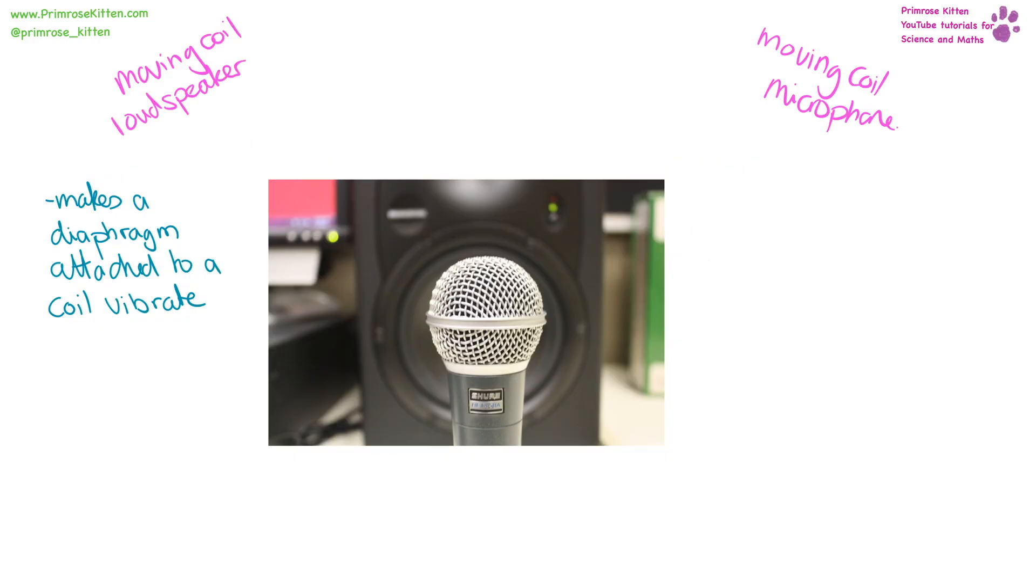A moving coil loudspeaker works by making a diaphragm attached to a coil vibrate. When we have a current passing through the coil, the force that is generated via the motor effect makes the coil move. Every time the current changes direction, the force reverses direction. So the coil is going to be going back and forwards, making the diaphragm go back and forward, generating sound waves.